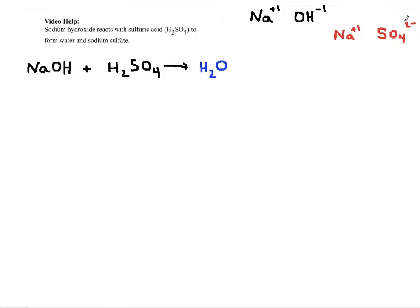So, the two, not the two minus, just the two, becomes the subscript for the Na, and then the one becomes the subscript for the SO4. So we don't even need to write anything for that, the SO4.